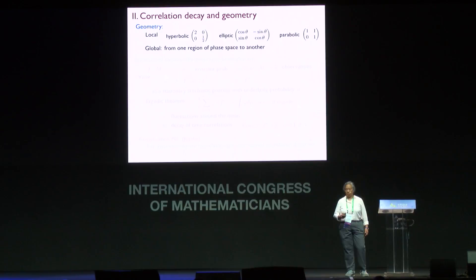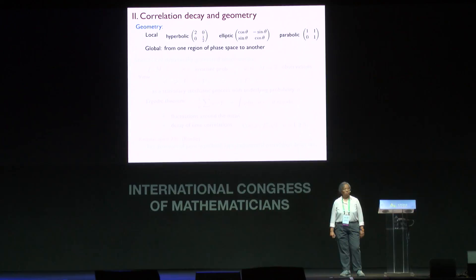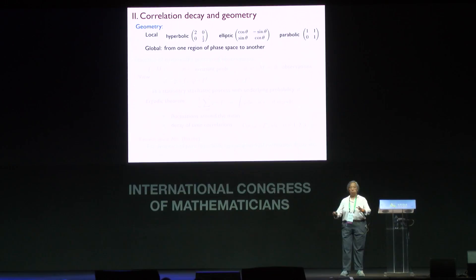Topic number two has to do with correlation decay, statistical properties, and geometry. For local geometry, I think of a dynamical system as either hyperbolic — the mapping is saddle-like, like the matrix (2,0;0,1/2) — or elliptical meaning rotational, or parabolic. Not a formal classification, but not a bad way to think about local geometry. For global geometry, I think of how easily one moves from one part of the phase space to another — how long does it take to go from here to there.